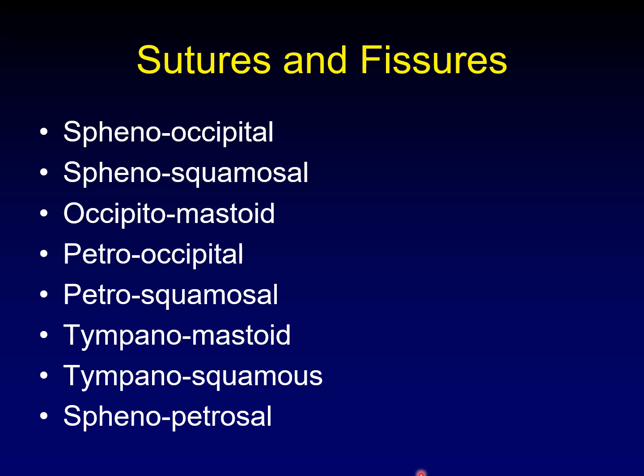The other major category of things that can be confused with fractures are sutures and fissures. Again, just a list of the sutures and fissures we're going to talk about. It does seem like I've randomly selected anatomic terms and paired them up, and it is kind of like that.